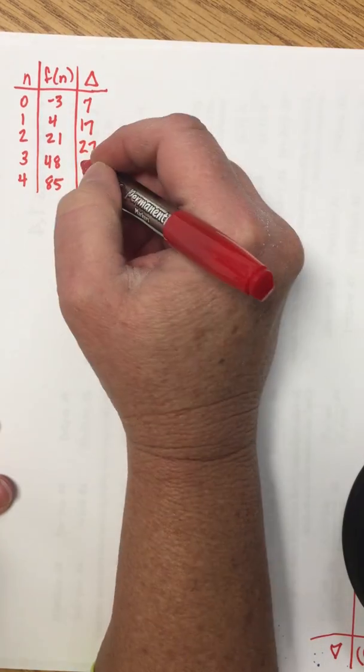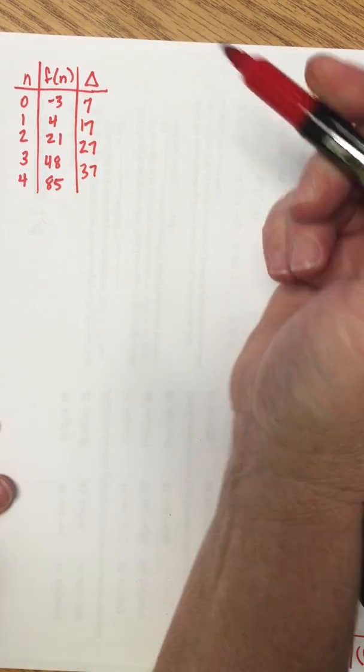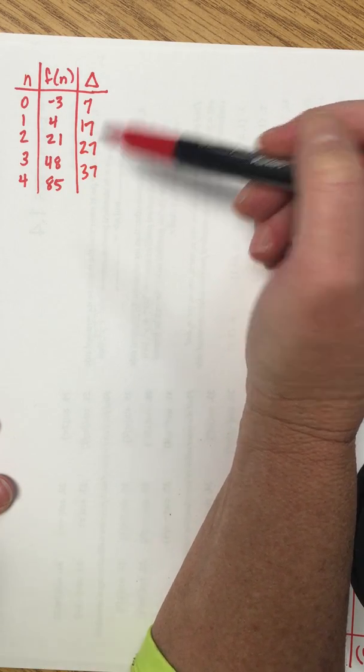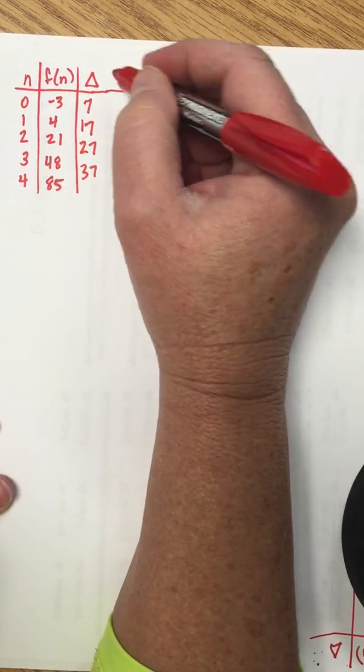If these differences were constant then we would know that we had a linear function, but they're not so we need to look further.